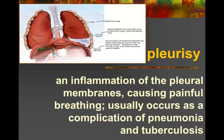Pleurisy. One thing we didn't cover: remember how bones have the periosteum, a thin covering? Well, you also have thin membranes around each lung called the pleural membrane. When it gets inflamed — meaning there's a bacterial or viral infection — that's pleurisy. It's very painful to breathe because just as an infected area on your skin is warm and painful to touch, think about breathing and that membrane being touched with every breath. It usually occurs as a complication of pneumonia, so if you don't take care of pneumonia it can lead to pleurisy. It's also a complication of tuberculosis.